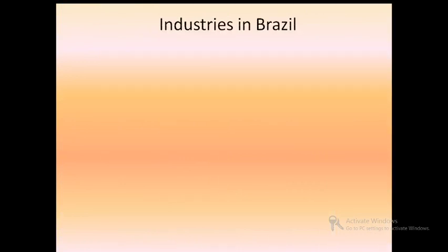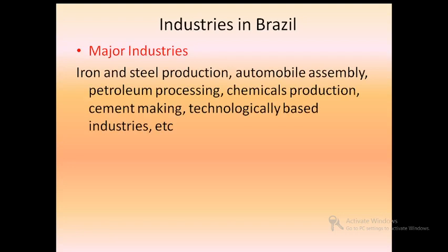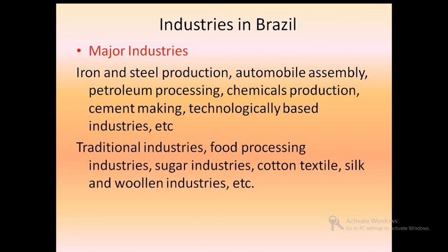We will now study about industries in Brazil. The major industries are iron and steel production, automobile assembly, petroleum processing, chemicals production, cement making, and technologically based industries. Apart from these, there are also traditional industries, food processing, sugar industries, cotton, textile, silk and woolen industries. Many large-scale industries are concentrated in the southern and southeastern regions. The northeast is traditionally the poorest part, but the government has taken initiative with new investment plans to promote industrial growth there as well.